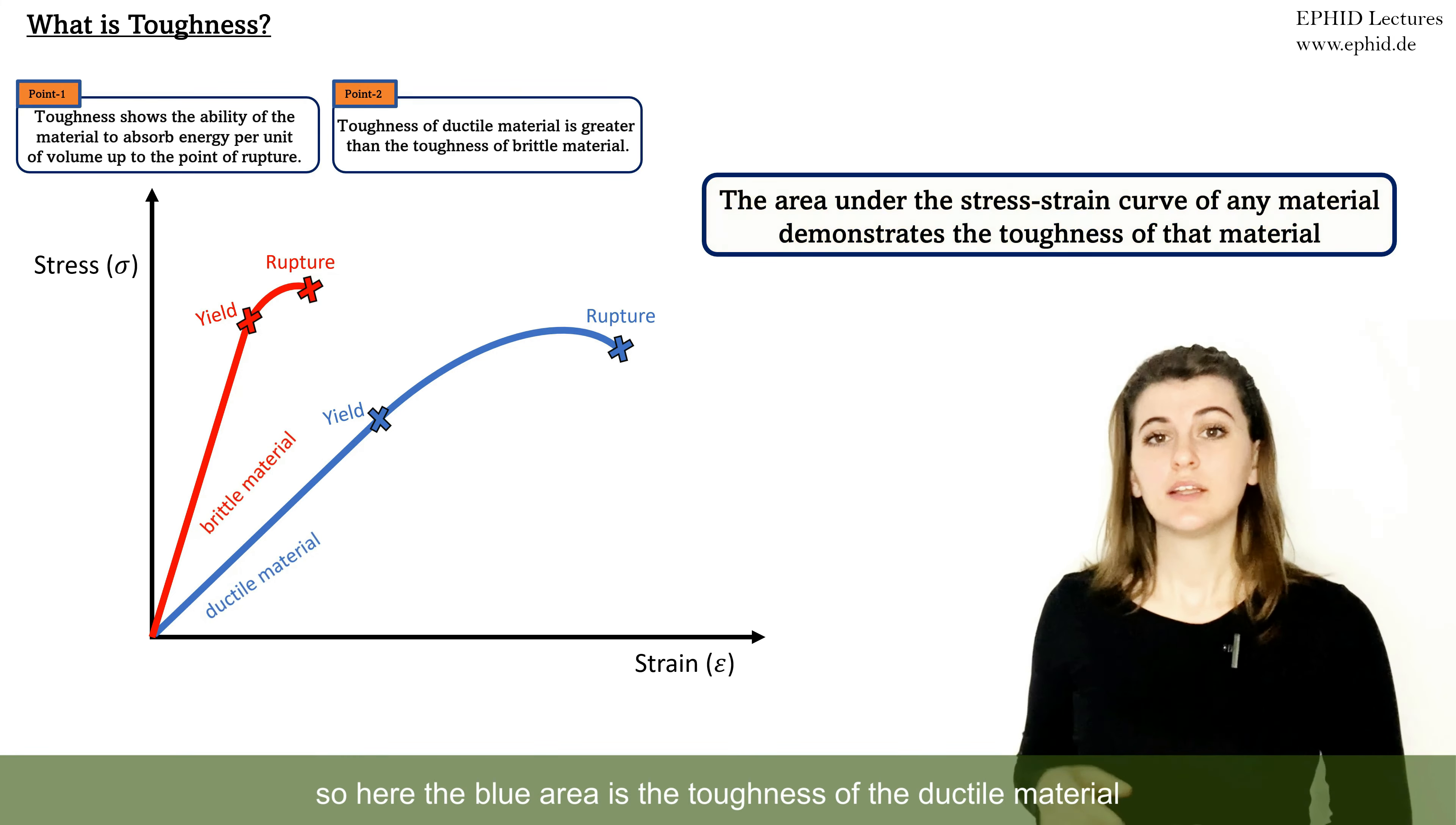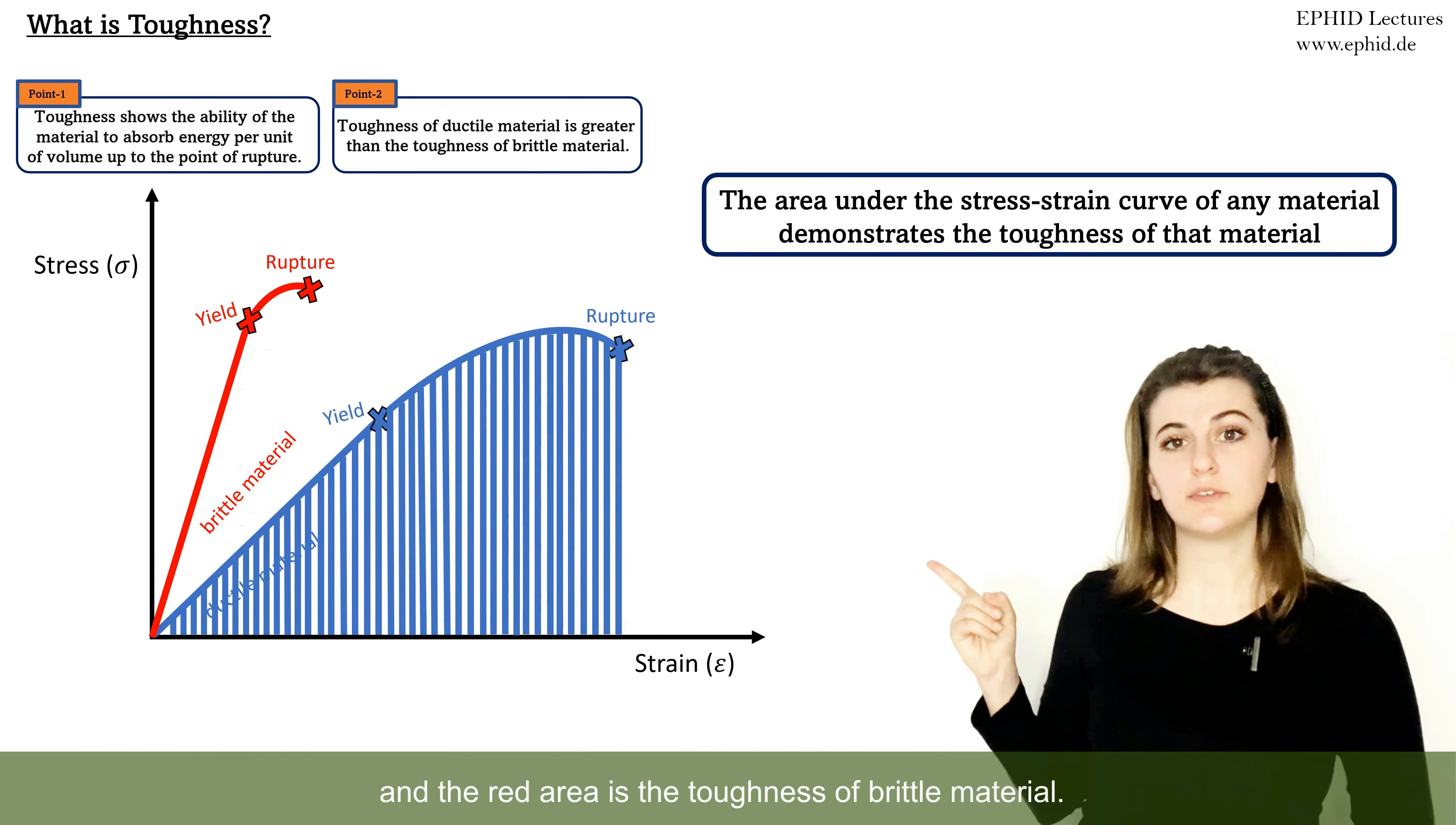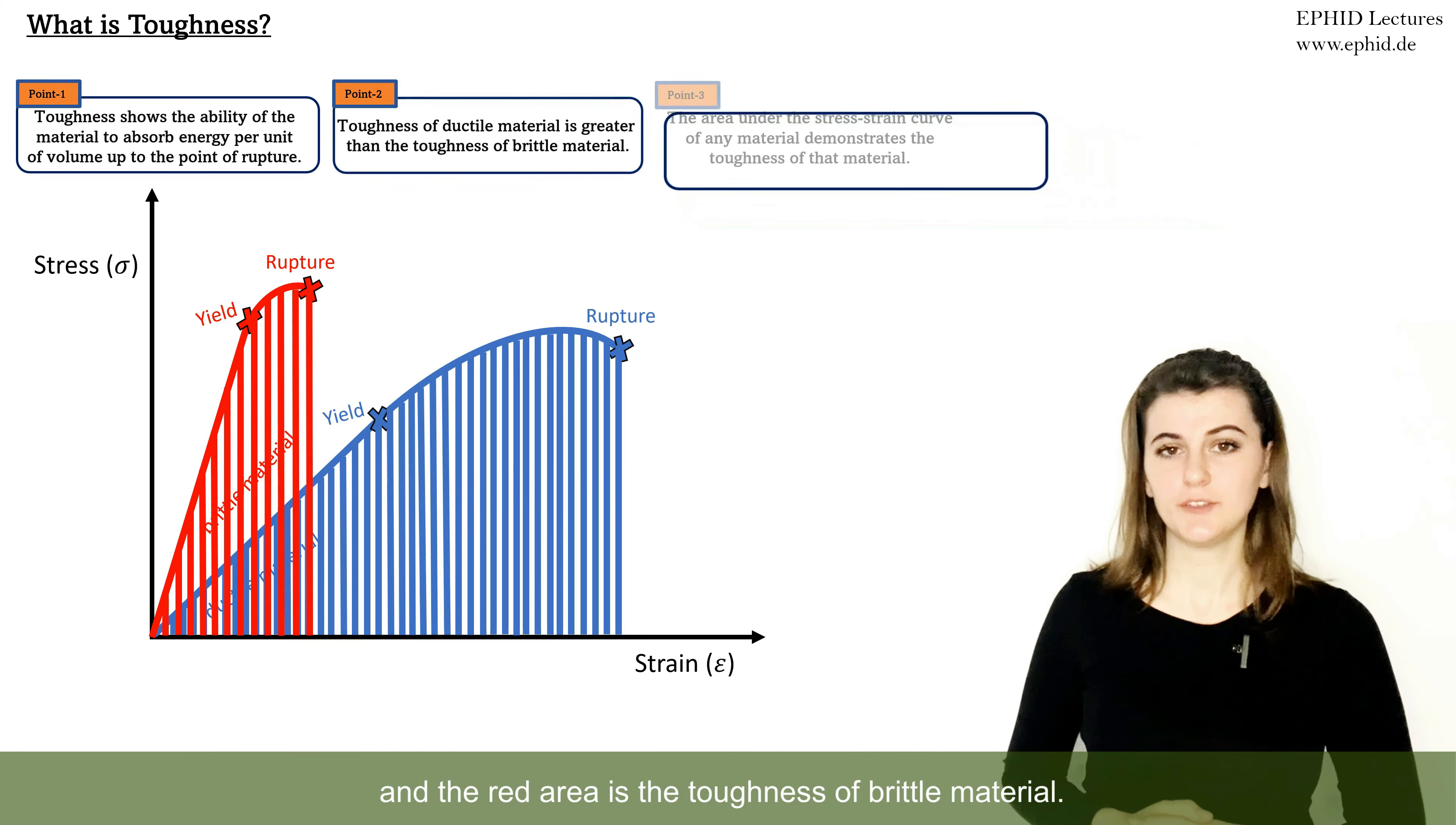So here the blue area is the toughness of the ductile material and the red area is the toughness of brittle material.